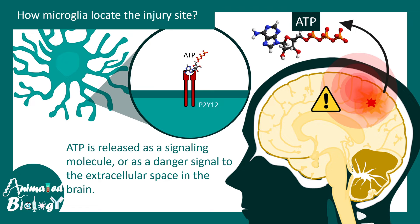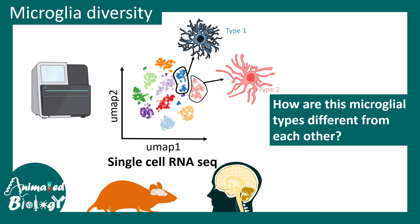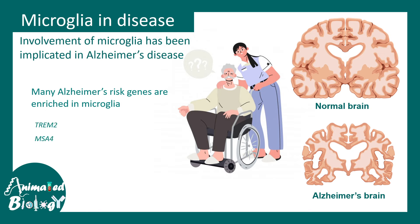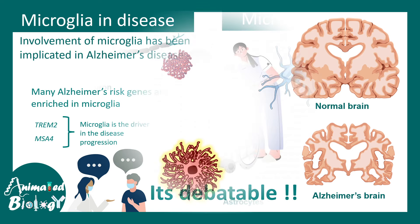How does microglia locate the injury site? From the injury site, ATP leaks out, and microglia possess specific purinergic receptors that sense ATP, helping them locate the injury site. Single-cell RNA sequencing has identified several subtypes of microglia — each morphologically distinct, with different molecular markers and functionality, revealing that microglia are very diverse in terms of both functionality and origin. Microglia are associated with many diseases including Alzheimer's disease, where many Alzheimer's risk genes such as TREM2 and MSA4 are enriched in microglia, leading to the hypothesis that microglia drive disease progression.